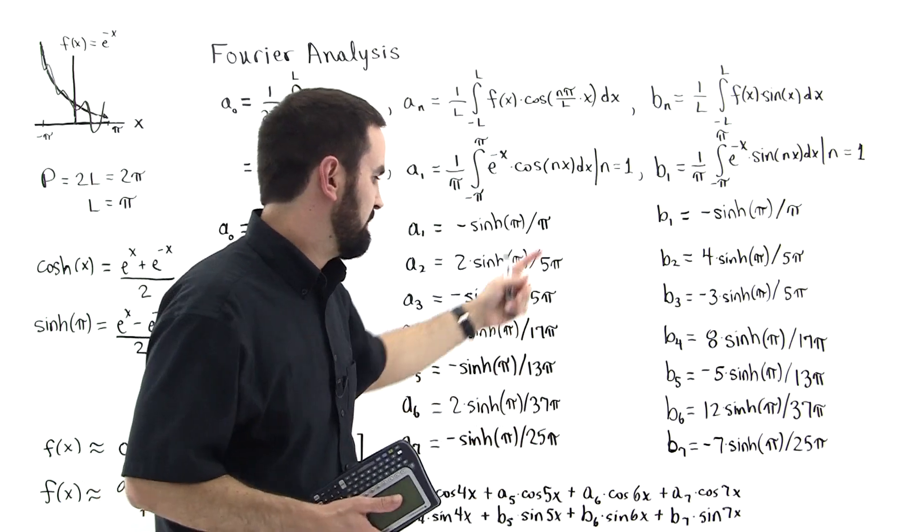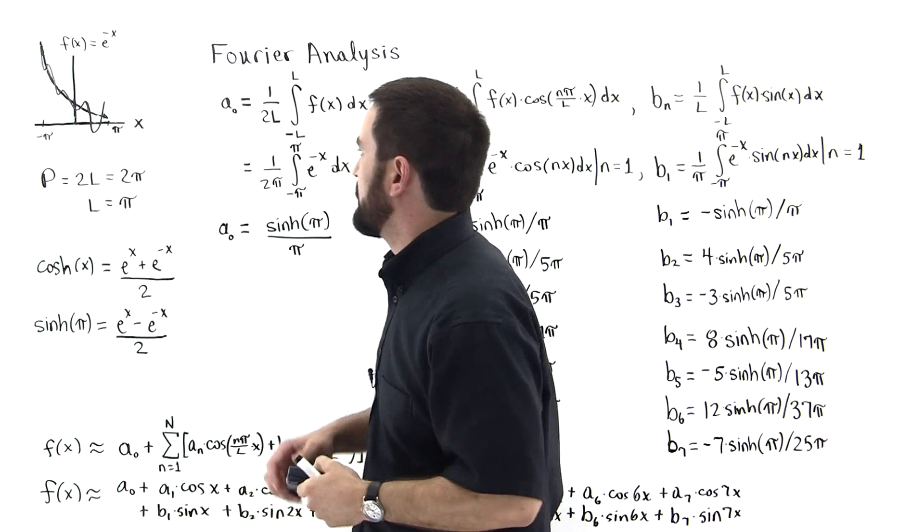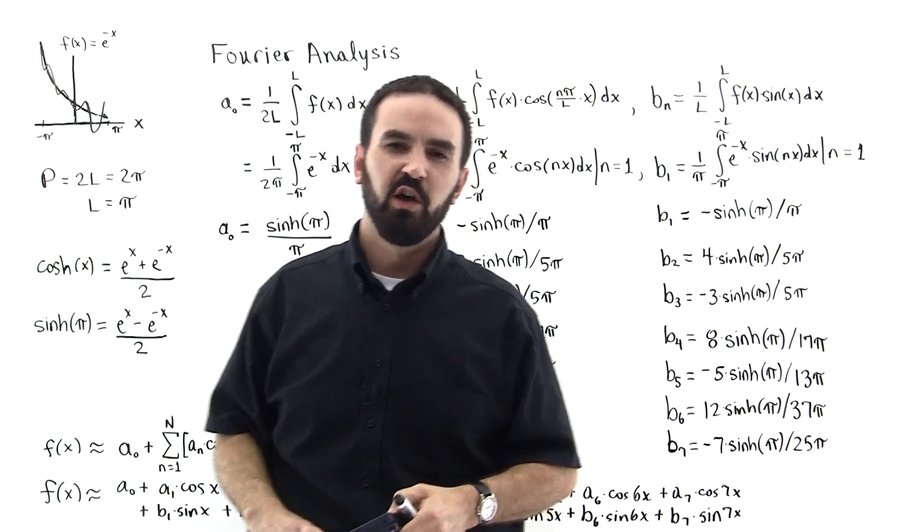And you get all these b's, right? So this will more closely model the function e to the minus x.